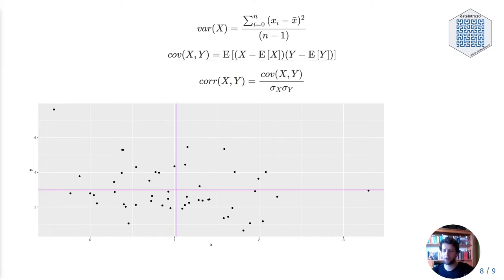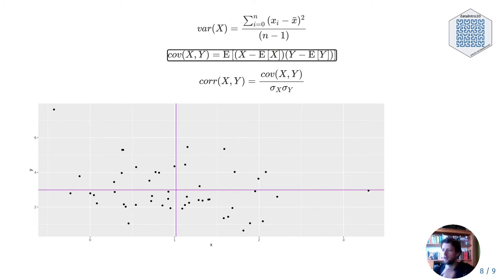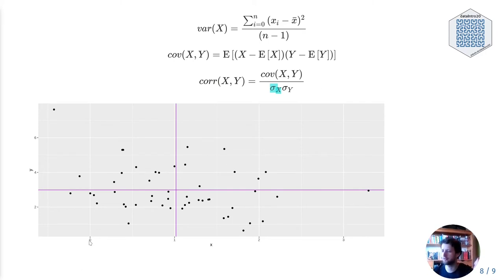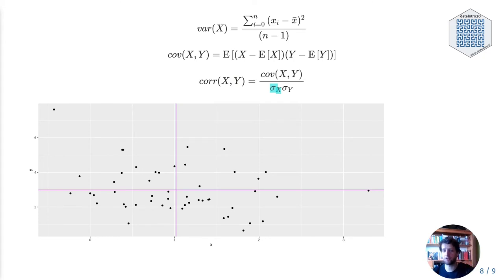The covariance has one small problem: it will have weird units — X times Y units — and the scale differs depending on the random variables. What we can do is standardize it by dividing by both standard deviations, denoted by sigma. This gives us the correlation coefficient, which can assume values between −1 and 1. A value of 1 is a perfect positive correlation; −1 is a perfect negative correlation. Its full name is Pearson product-moment correlation coefficient, or Pearson's r. We can square it to get R-squared, which indicates the strength of the correlation with values between 0 and 1, independent of direction.